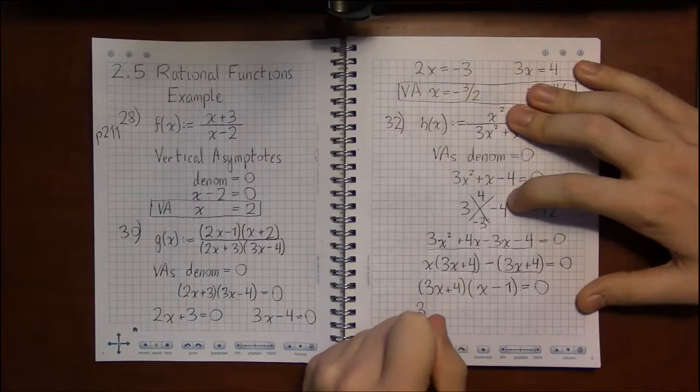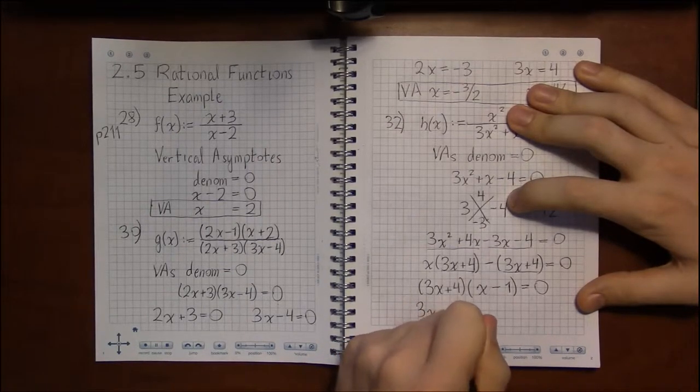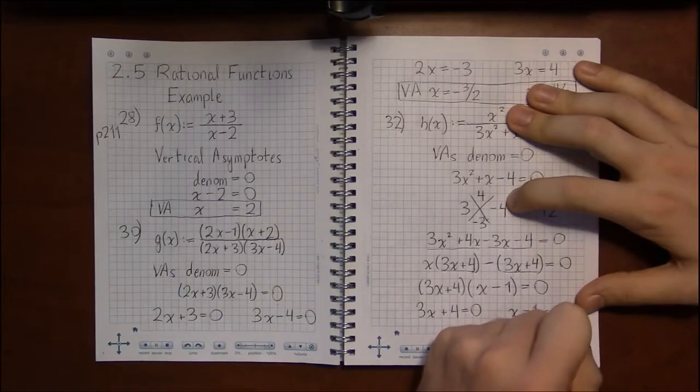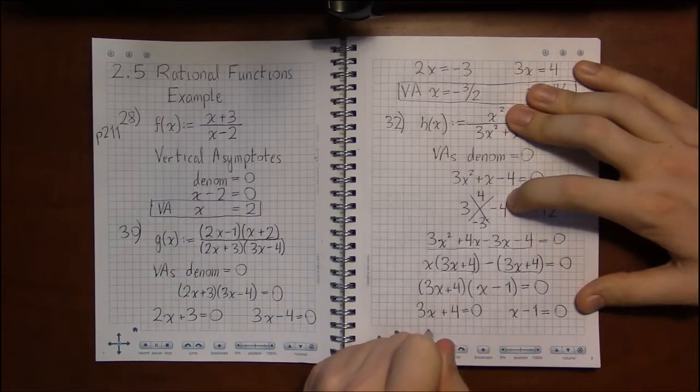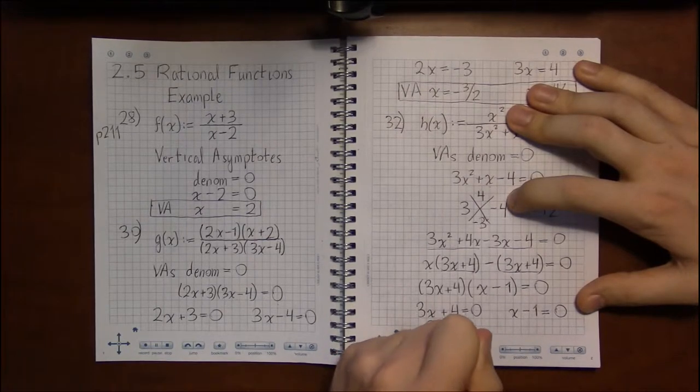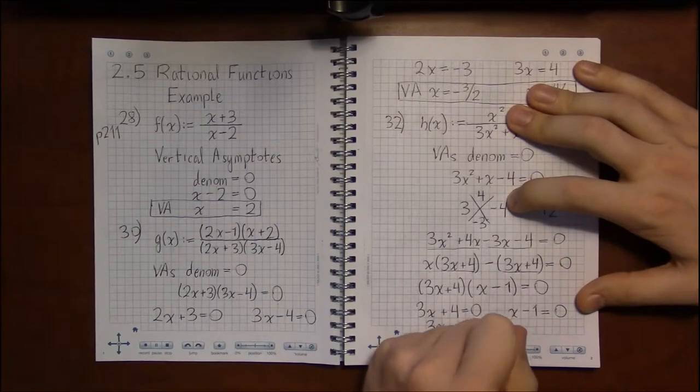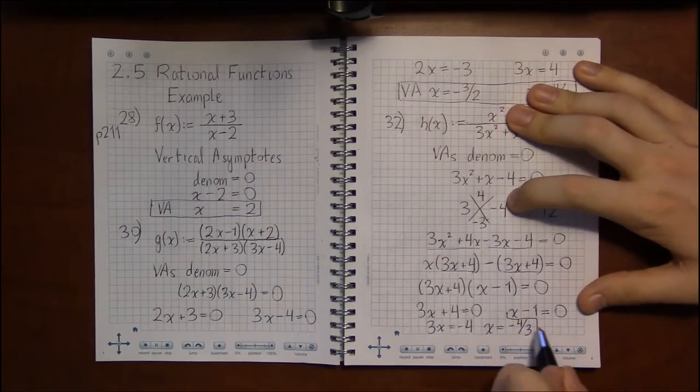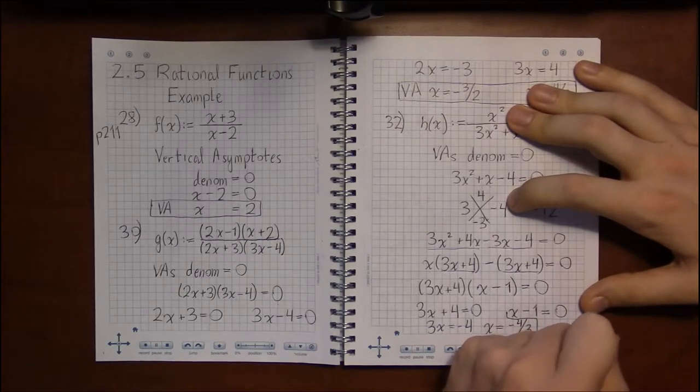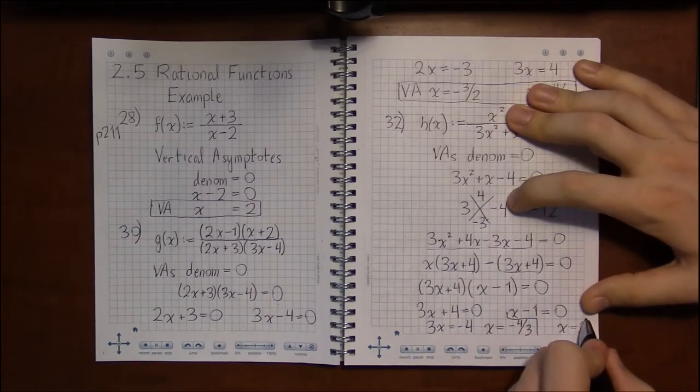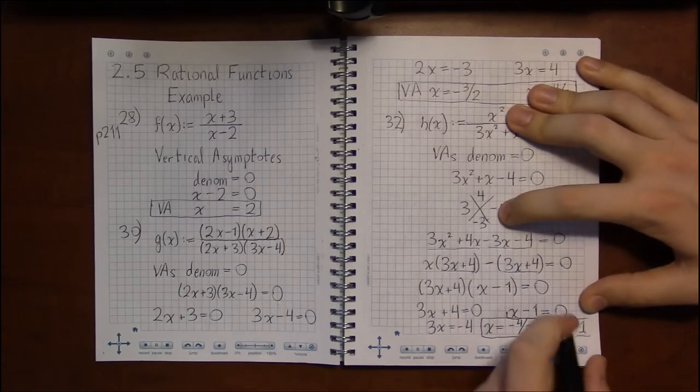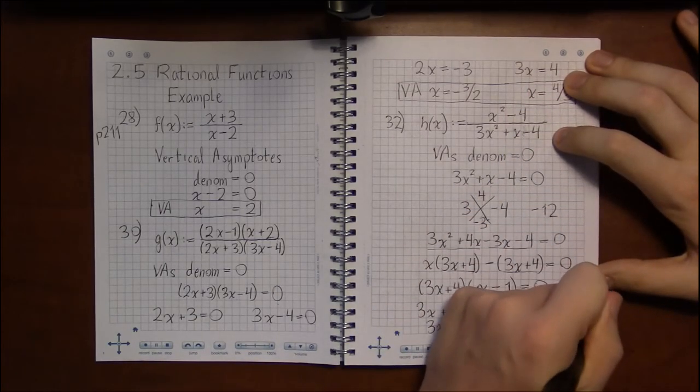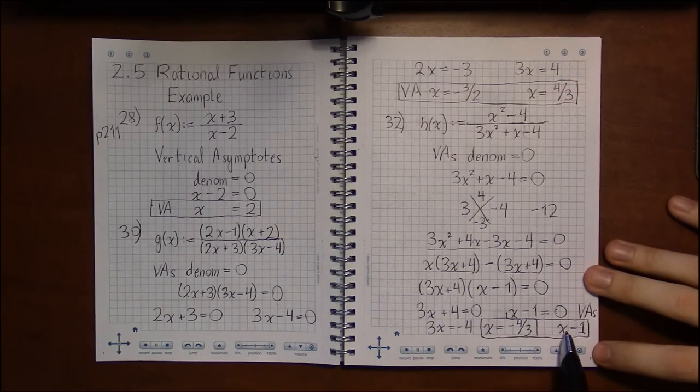We're going to set each factor equal to zero. Because this is the only way two numbers ever multiply together to get zero, is if one of those two numbers we started with was zero. In this case, we're going to get 3x is minus 4, which means x is minus 4 thirds. And then in the second equation, that's simple enough, it's just going to be x equals 1. And these two will end up being the vertical asymptotes for this function: x equals minus 4 thirds and x equals 1.